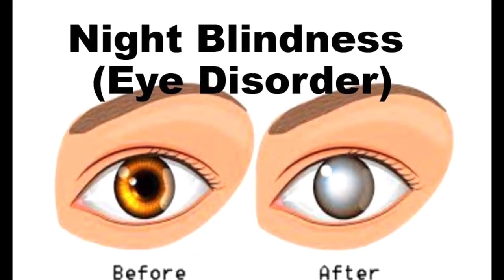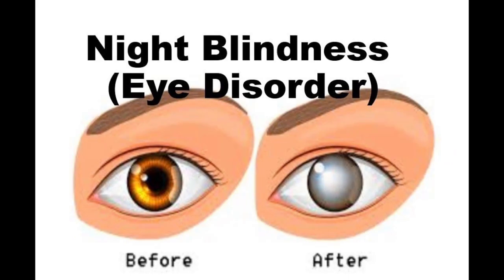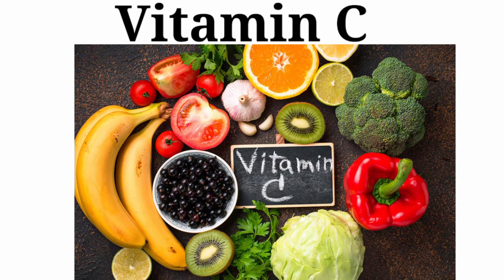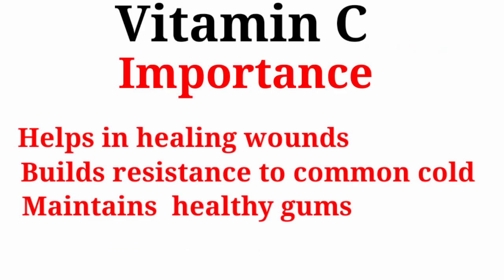The disease due to deficiency of vitamin A is night blindness. In night blindness, the person is not able to see very clearly in dim light. Lemon, orange, and crabs are the common food sources for vitamin C.